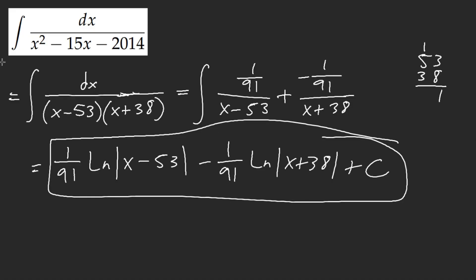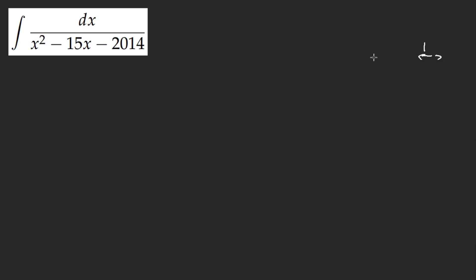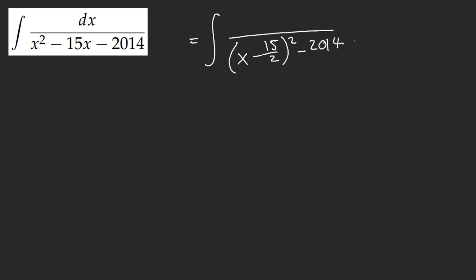So what does it look like if we complete the square like a human being? This is the route that I went, and this is nasty. You need to do (x minus 15/2) squared, and then you have to do minus 2014 and then minus 225/4. I don't want to multiply this by 4.